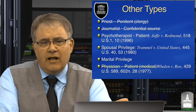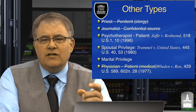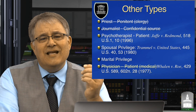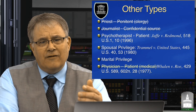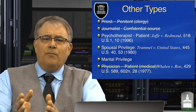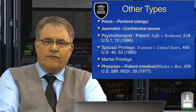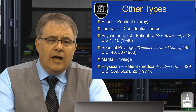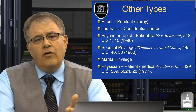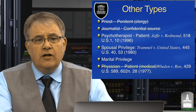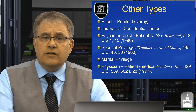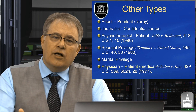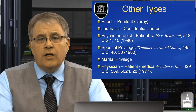I've got a slide up here and you'll notice several of them have lines drawn through them. The reason is they don't actually exist in the federal system. There is no priest-penitent privilege at the federal level, though almost every state has one. There is no journalist-confidential source privilege — in fact, many states have created such a privilege by statute in response to jurisprudence holding that no such privilege exists.